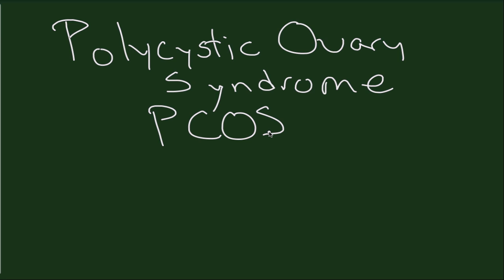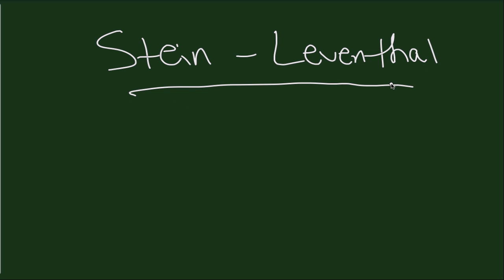In terms of the history of PCOS, it was first noted by two physicians back in 1935, Dr. Stein and Dr. Leventhal. They noticed women with ovarian cysts and anovulation, or lack of ovulating or having a normal menstrual period. Thus, it got its name as the Stein-Leventhal syndrome. It has since been changed to the polycystic ovary syndrome that we know so commonly now.